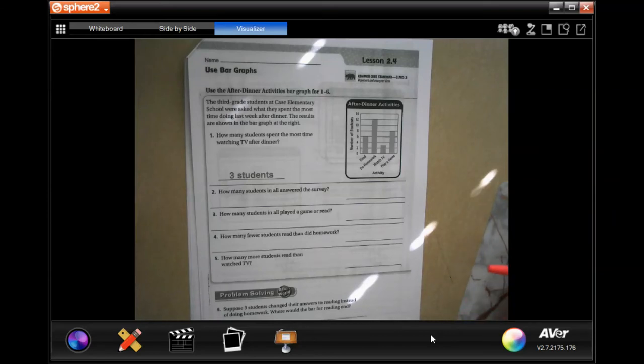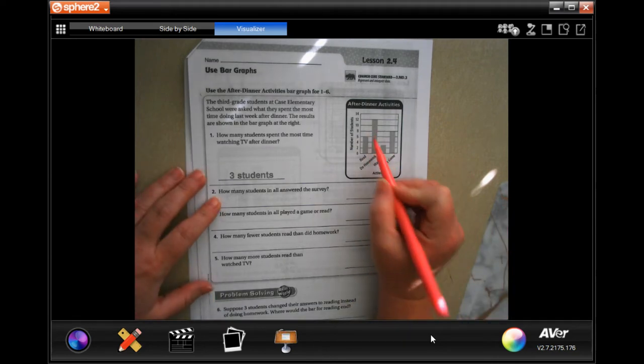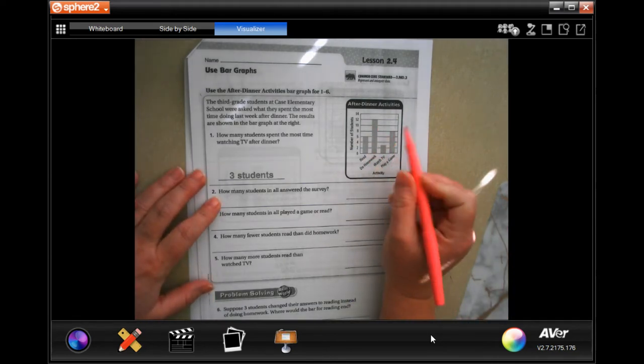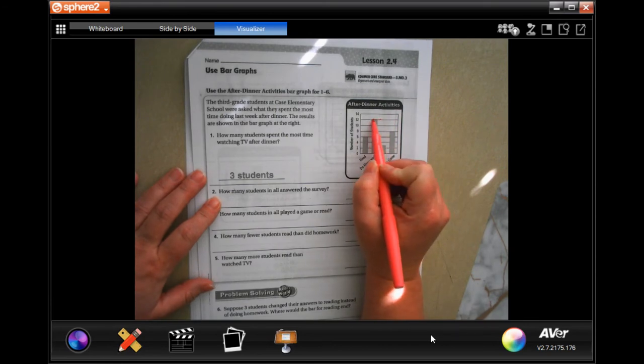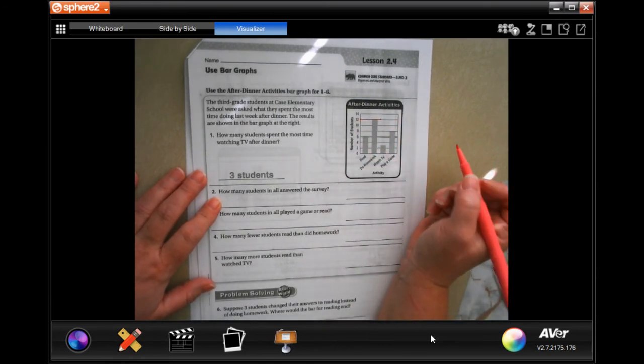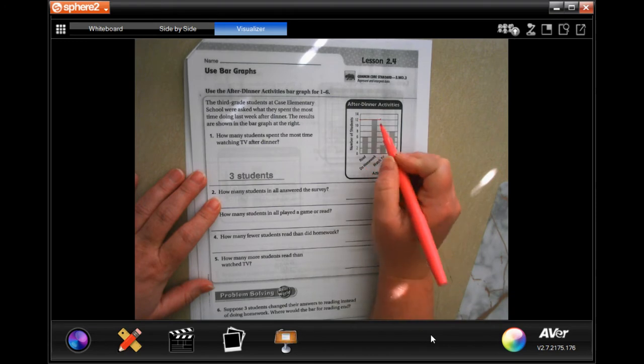Hey y'all, welcome to third grade chapter two lesson four. We're going to get started. Now we're going to learn how to work a bar graph. All a bar graph means is these bars that go up, so all you're doing is following it over and that's where it's at.